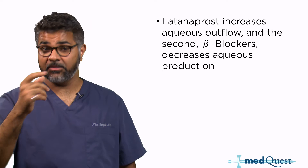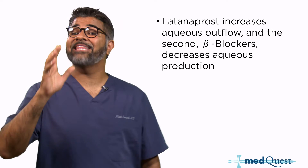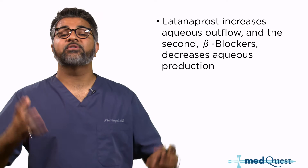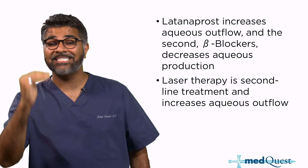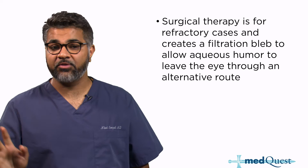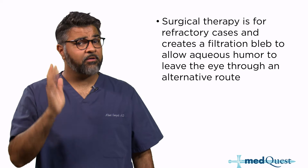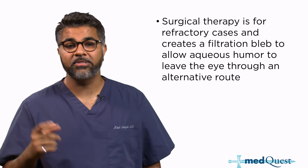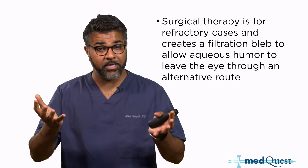The first medication is latanoprost, which increases aqueous outflow. The second is beta blockers, which decrease aqueous production. Latanoprost increases outflow and beta blockers reduce production of fluid, so the pressure in the eye goes down. If that doesn't work, laser therapy is the second-line treatment, which creates a pathway that increases aqueous outflow. Surgical therapy is only for refractory cases — if someone fails both medical and laser therapy. For those patients, we create a filtration bleb to allow aqueous humor to leave the eye through an alternative route.